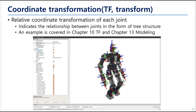This is TF. For a joint-based robot, each joint can be described using relative coordinate transformations. Forward or inverse kinematics, for example, can calculate joint angles or poses based on it. The visualization program uses TF data to visualize the robot's pose on screen. We'll see more details later in chapters 10 and 13.